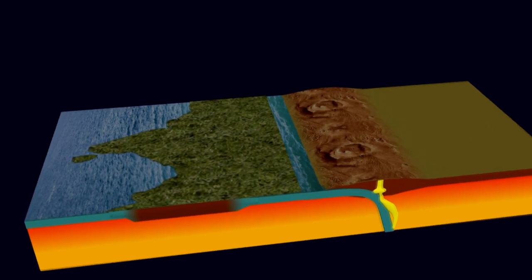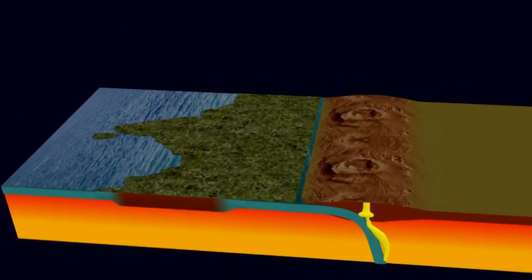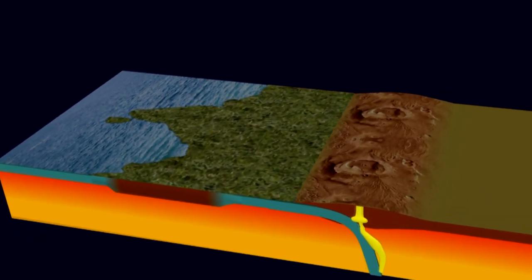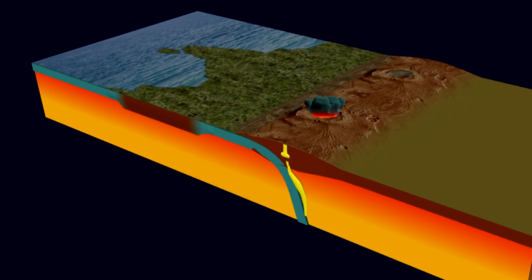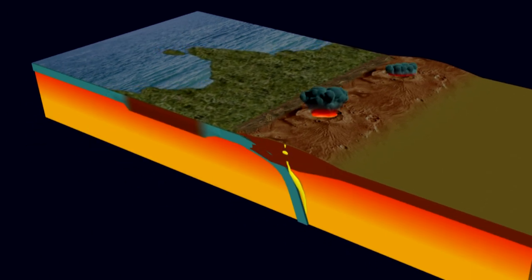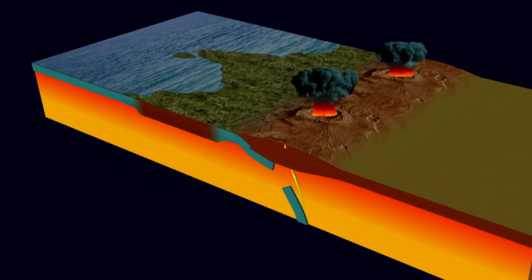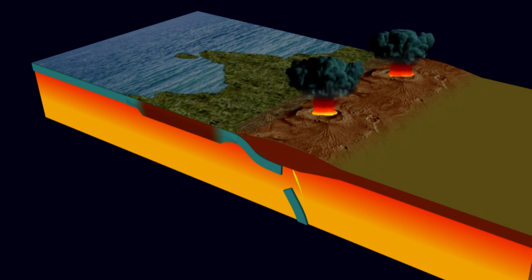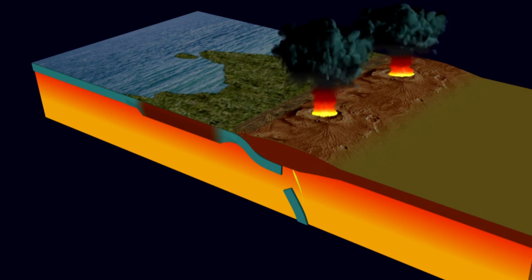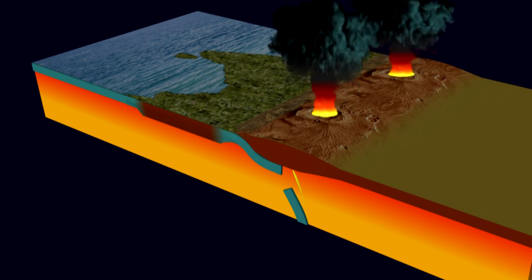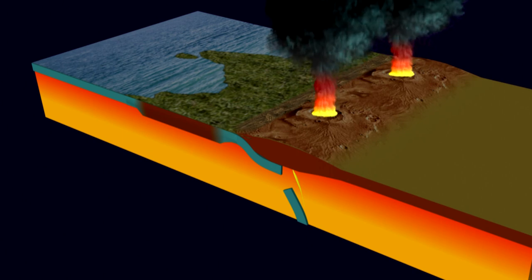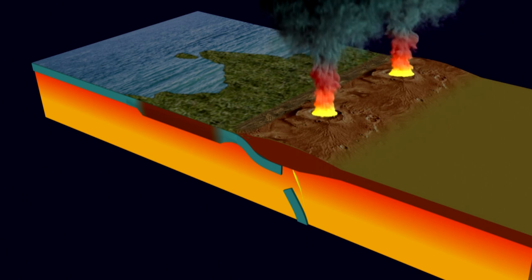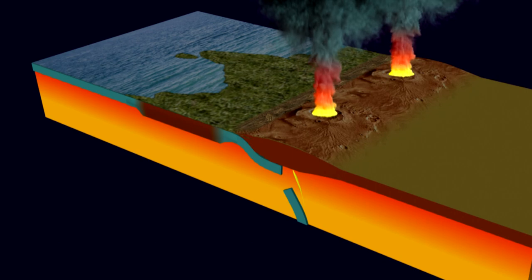When we say movement, we do not mean a second, a minute, an hour, a day, a week, a month, or a year. We mean millions of years — that is how long the shifting has taken place to reach the present position of the Indian plate. This is the overall orogenic movement.